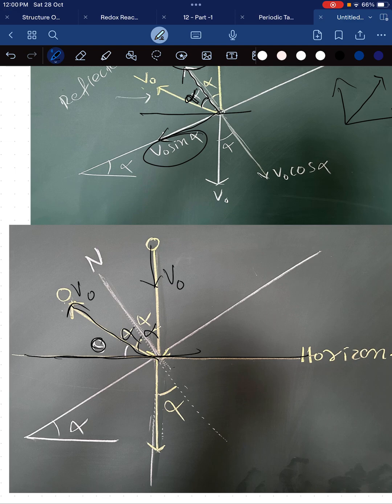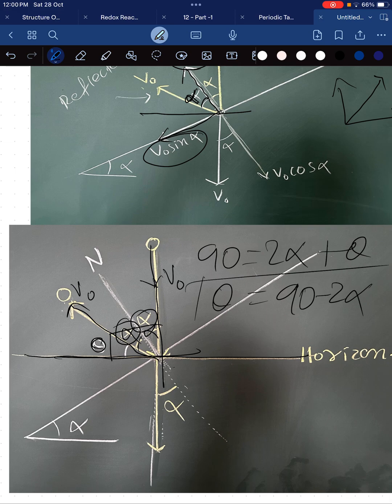You can see if this is horizontal, this is vertical, then the total angle is 90. So 90 equals alpha plus alpha, which is 2 alpha plus theta. Therefore theta equals 90 minus 2 alpha, which is the correct answer.